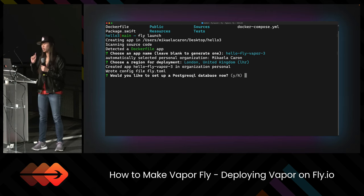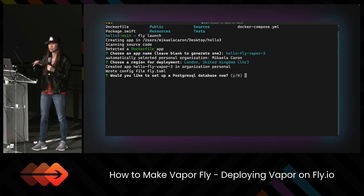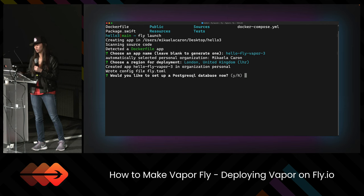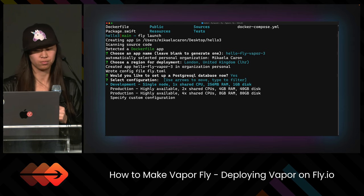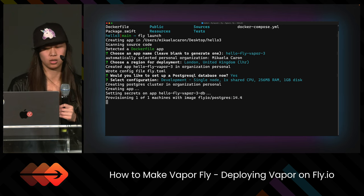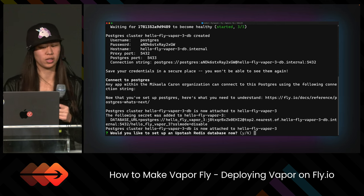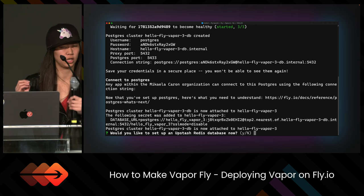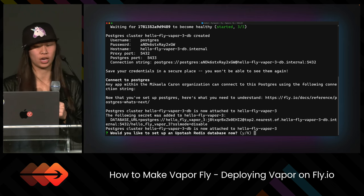The URL created from mine will be helloflyvapor3. After we select a region, it creates the fly.toml file — toml and yaml are basically both just text formats for creating different settings. We are going to select yes to set up our database right now, then choose which kind of configuration we want. When we hit enter, it goes through and starts creating everything for us — it creates our database and gives us all of the secrets right there. The app is created, the database is created, and it also attaches the app to the database automatically.